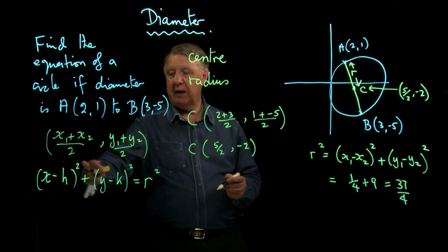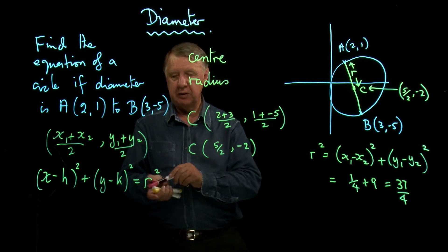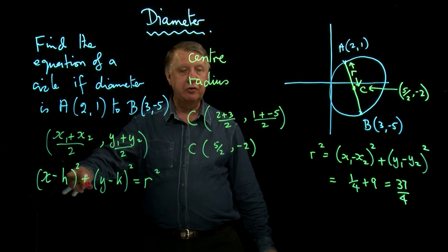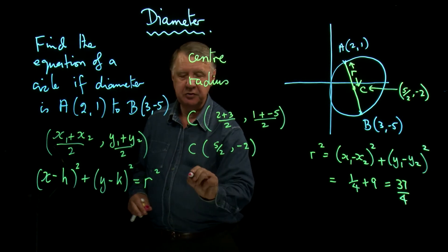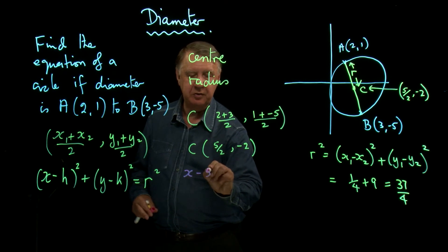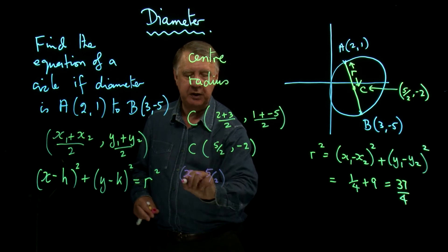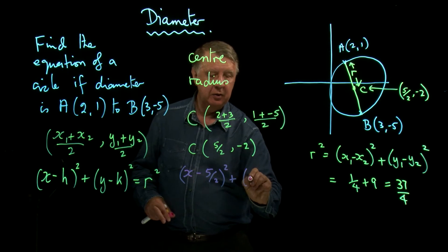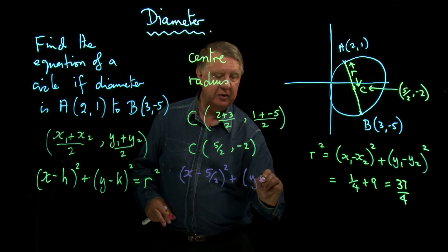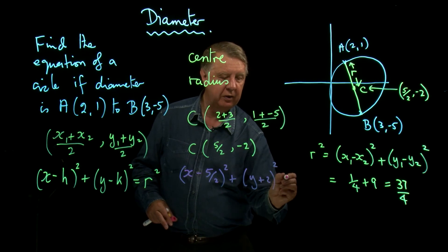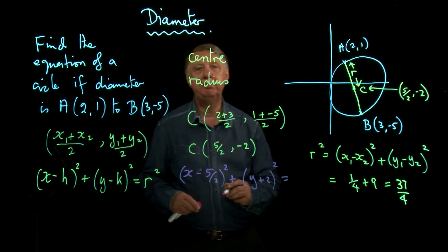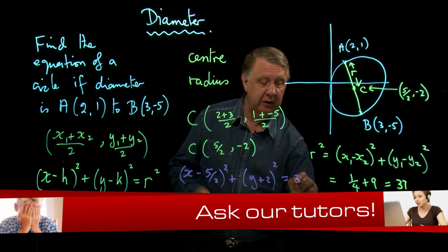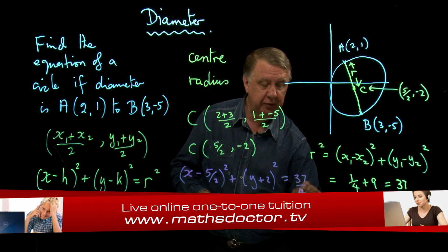I can now go to my formula. So let's highlight this in a different color then. So H the X coordinate is 5 over 2. So it's X minus 5 over 2 squared plus y minus minus 2, that's plus 2, squared equals r squared. You don't need to do anything with that. You don't need to panic. 37 over 4.